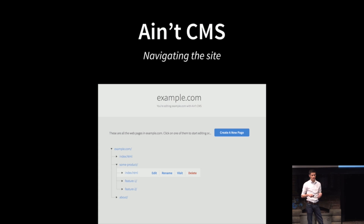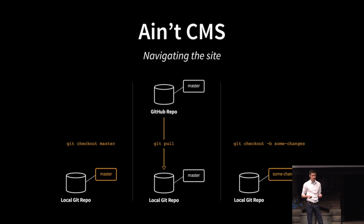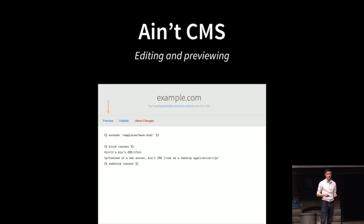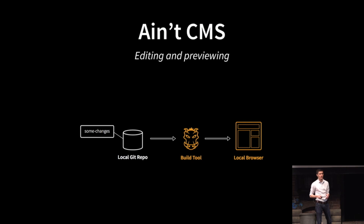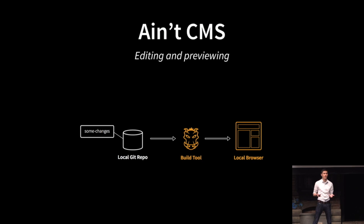Then the app displays all the files in the static site, and when the user selects one, the app automatically checks out the master branch, does a pull to make sure it's up to date, and checks out a new branch to store all their changes. The user can then edit the contents of the selected file — right now it's just a plain text editor, but add a WYSIWYG and you've got a WordPress-style workflow running entirely on the user's local machine. After making changes, they can click Preview, and the app automatically saves those changes to disk, compiles the site using their build tool of choice, and opens up the compiled web page in a new browser tab — no commands to remember.